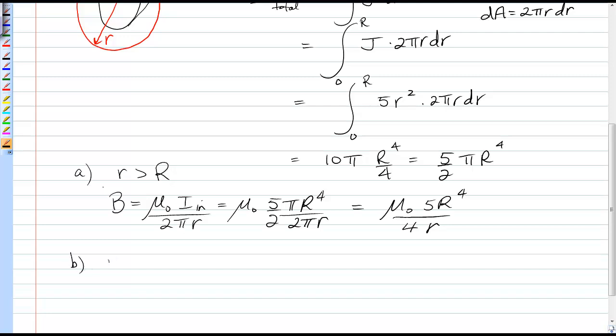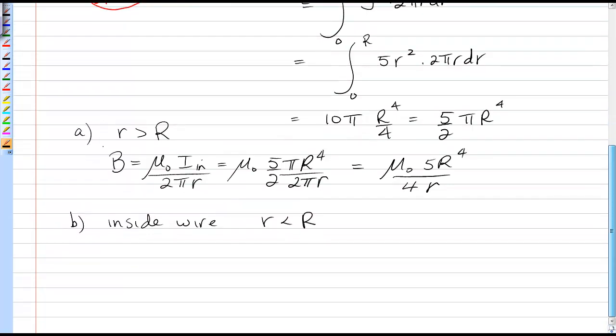Now, if we go inside the wire, for r less than R, I'm not going to have the total current. I'm going to have some proportion, but I still need to integrate to get that inner current going through that inner Ampere circle.